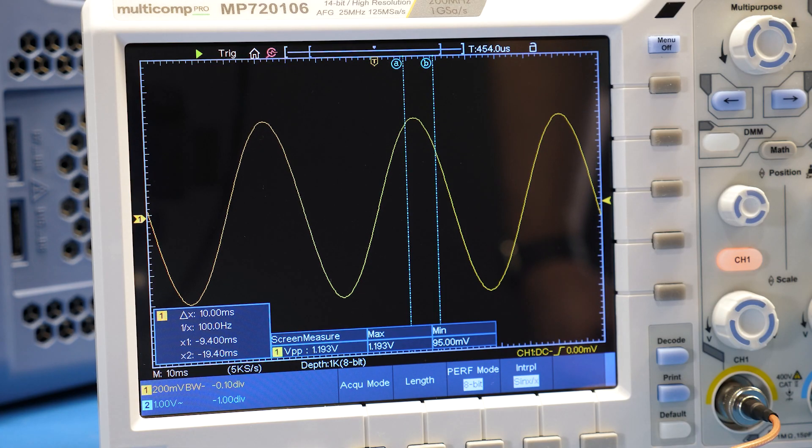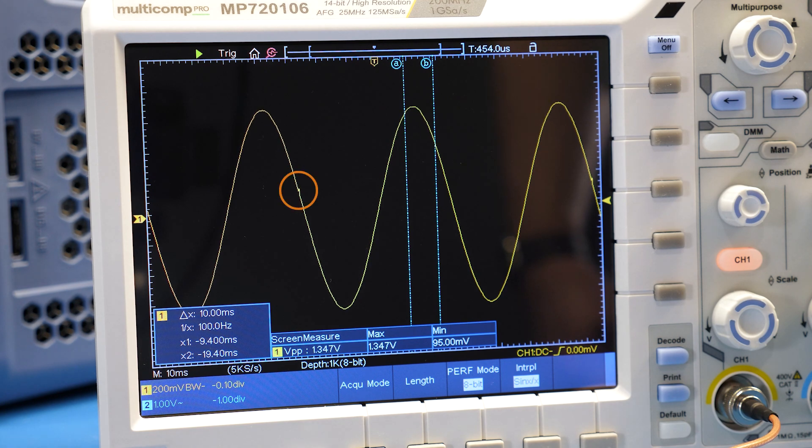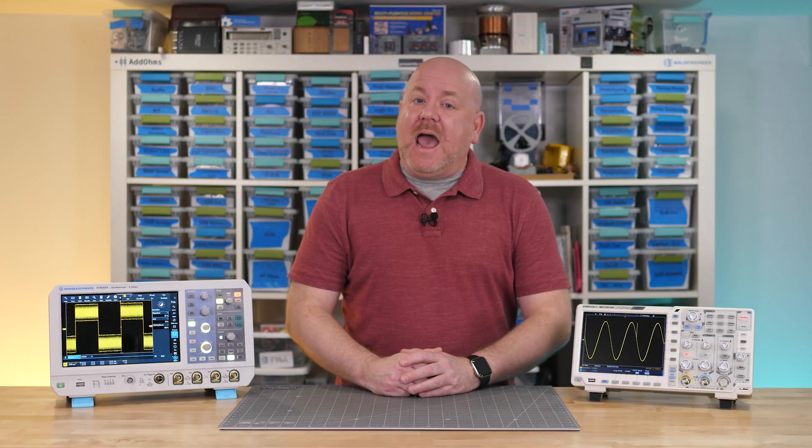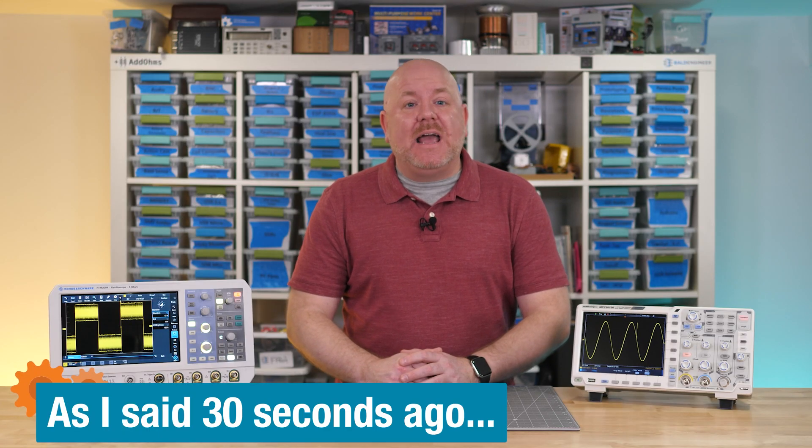For comparison, let's look at that glitched sine wave on the multicomp scope. You can kind of see the glitch, but you really have to want to because it's getting averaged out. Averaging requires a repetitive signal and a stable trigger. It removes random noise, but that means it can also hide seemingly random events.